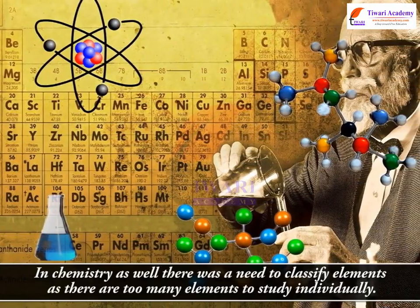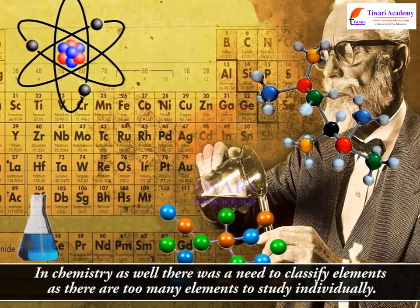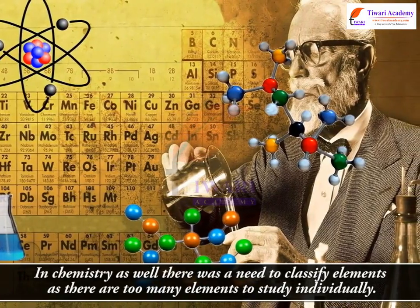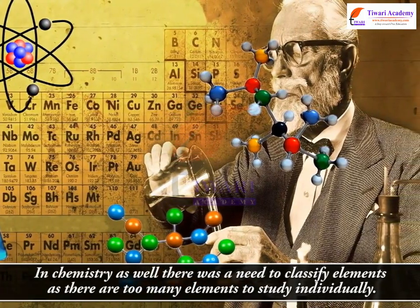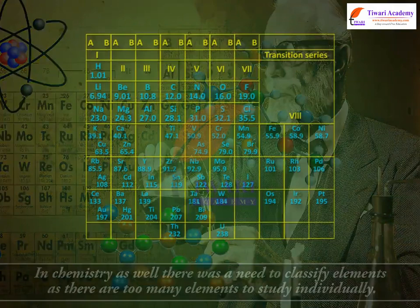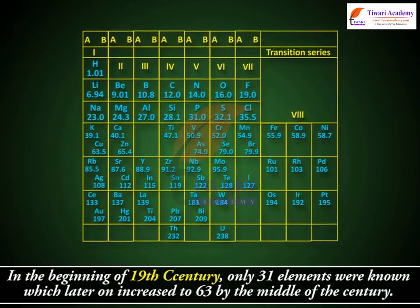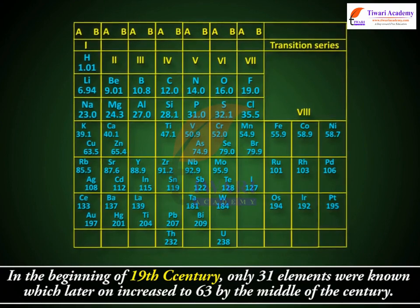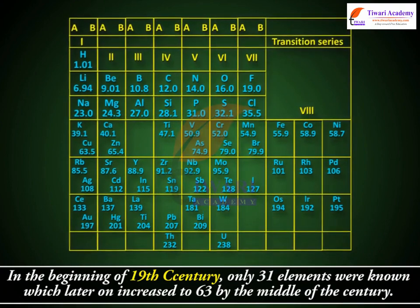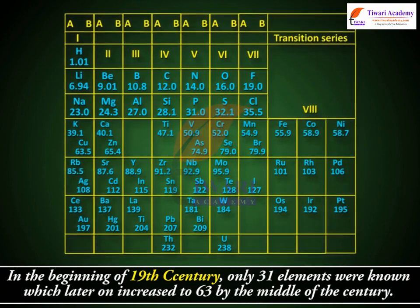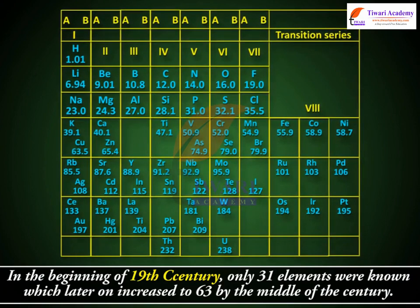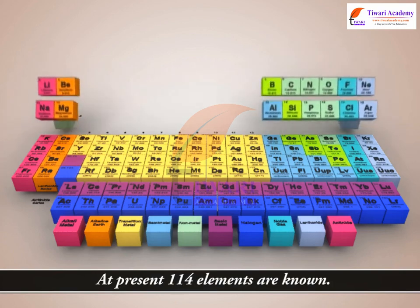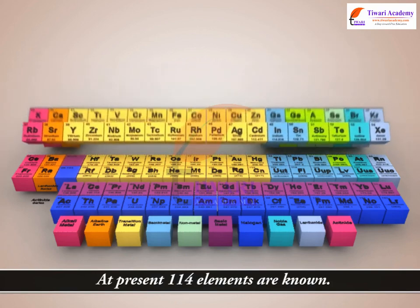Similarly, in chemistry as well, there was a need to classify elements as there are too many elements to study individually. In the beginning of the 19th century, only 31 elements were known, which later on increased to 63 by the middle of the century. At present, 114 elements are known.